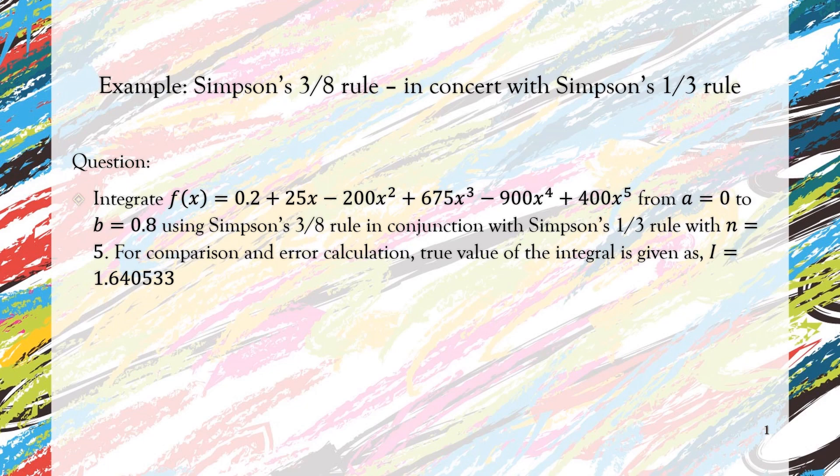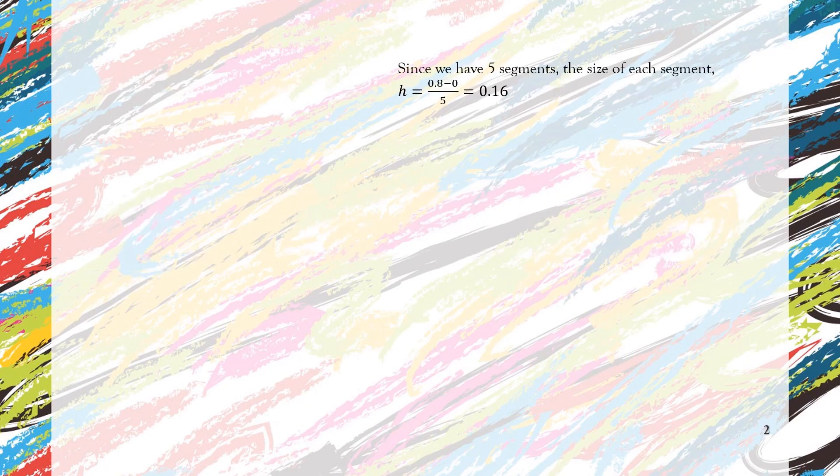Since we have 5 segments, the size of each segment is (0.8 - 0) divided by 5, so we have equally spaced segments.